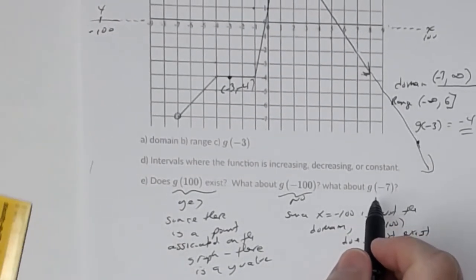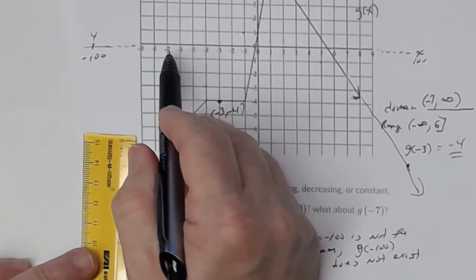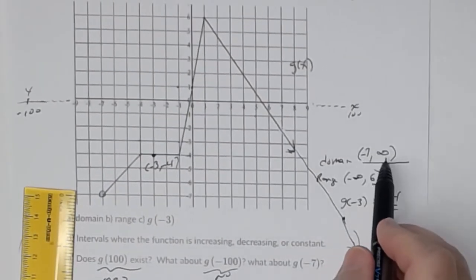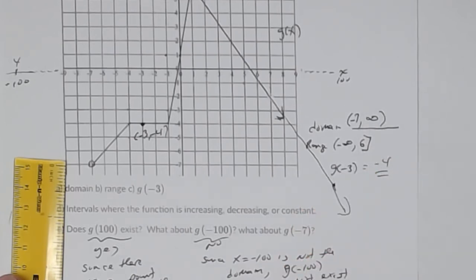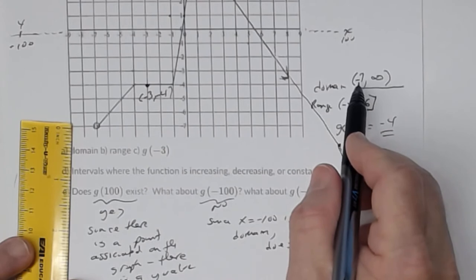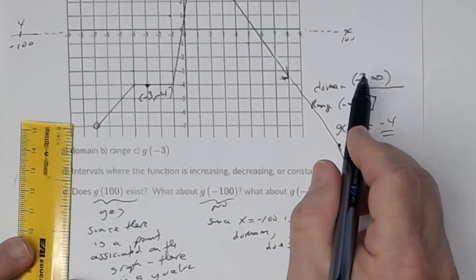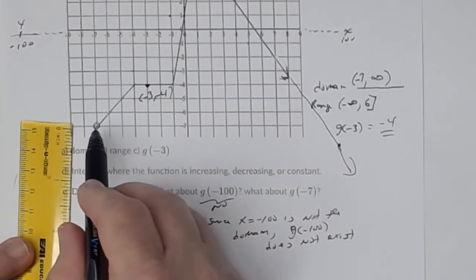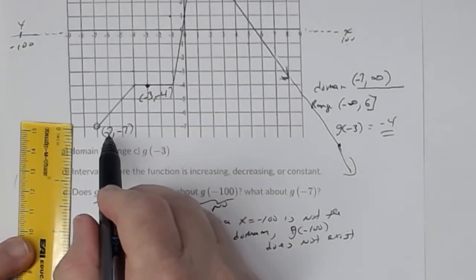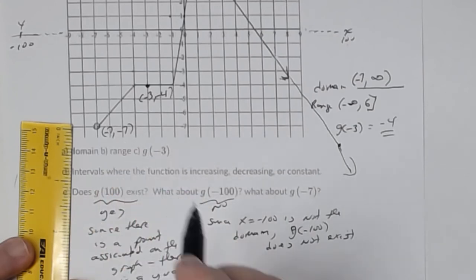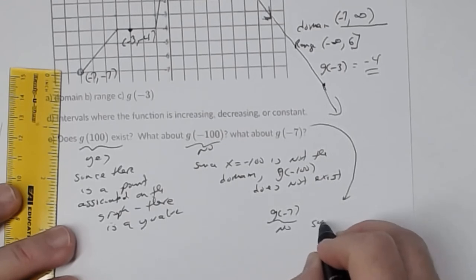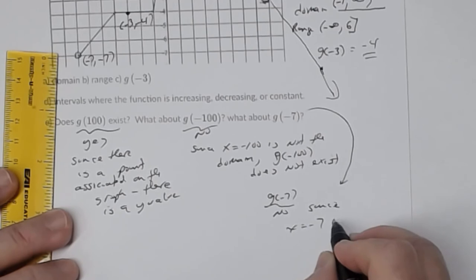What about g of negative seven? You see x equal negative seven on the graph, but ask yourself: is negative seven in the domain? There's a parenthesis there — an open circle — meaning that point is not part of the graph. So x equal negative seven is not in the domain, and therefore g of negative seven does not exist.